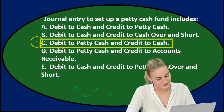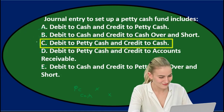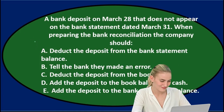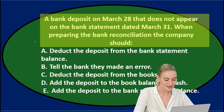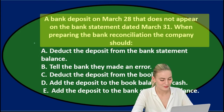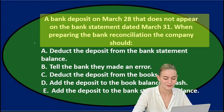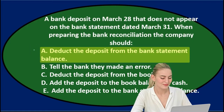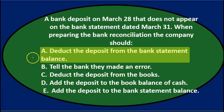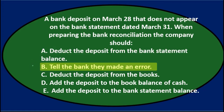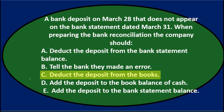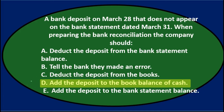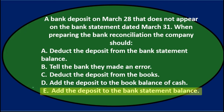The journal entry to set up a petty cash fund includes C — debit to petty cash and credit to cash. Next question: a bank deposit on March 28th that does not appear on the bank statement dated March 31st — when preparing the bank reconciliation, the company should: A) deduct the deposit from the bank statement balance; B) tell the bank they made an error; C) deduct the deposit from the books; D) add the deposit to the book balance of cash; E) add the deposit to the bank statement balance.